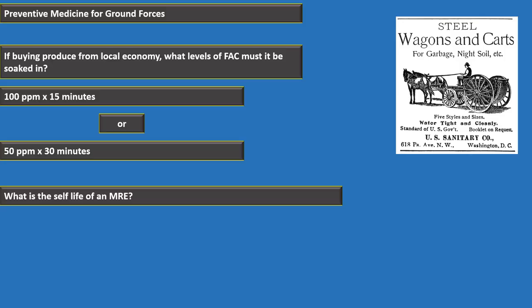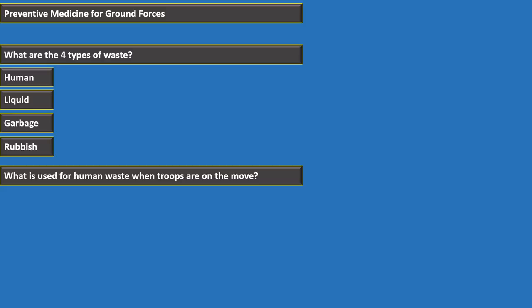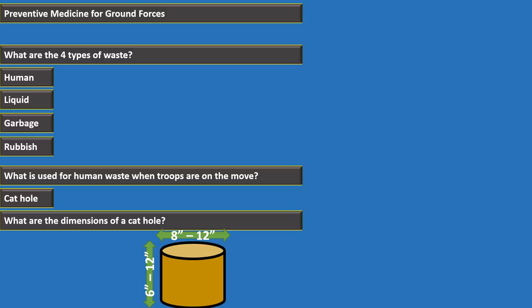The four types of waste are human, liquid, garbage, and rubbish. When troops are on the move, a cat hole is used for human waste. A cat hole is 8 to 12 inches wide by 6 to 12 inches deep. For temporary bivouacs, a straddle trench is used, which serves 25 people and measures 4 feet by 1 foot by 2.5 feet deep.